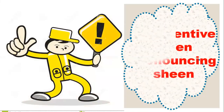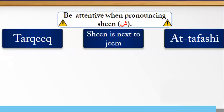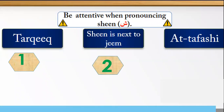Be attentive when pronouncing Sheen. Number one: tarqiq — Sheen is always muraqaqa. Sha, sha, not sha with heaviness. Sheen is next to Jim in makhraj: ash, aj. Don't mix Sheen and Jim.